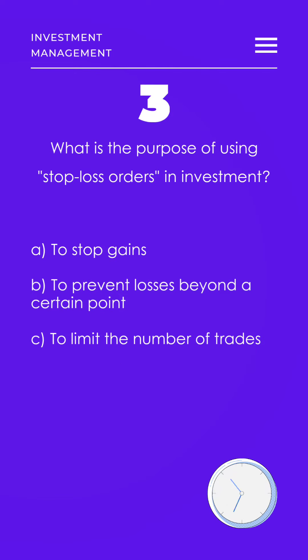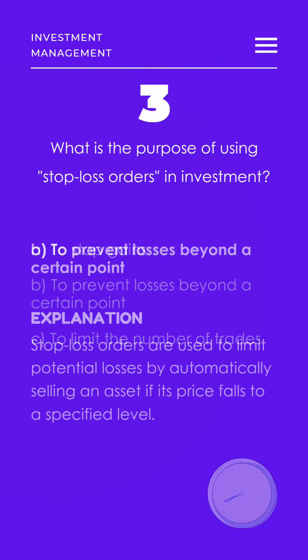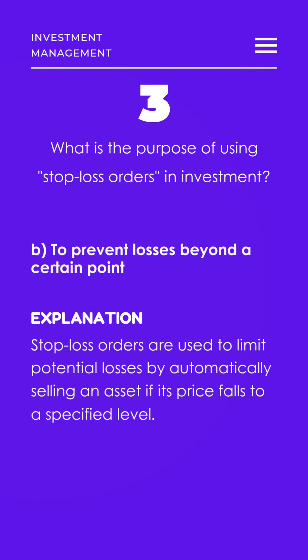What is the purpose of using stop-loss orders in investment? To prevent losses beyond a certain point. Stop-loss orders are used to limit potential losses by automatically selling an asset if its price falls to a specified level.